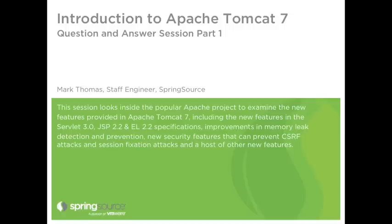The first question is: from what version was memory leak protection in Tomcat 6 backported? It was 6.0.24 that was the first release where those features started to appear. There were additional features added in 6.0.26, and there are more features again in 6.0.28 that are being worked on at the minute.